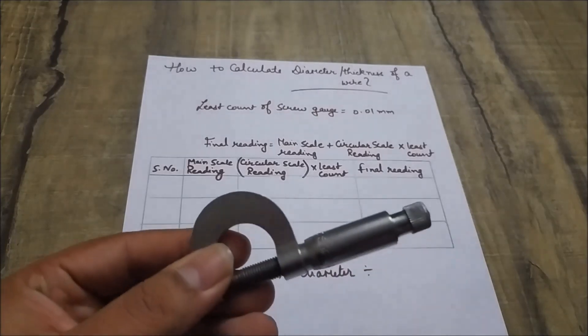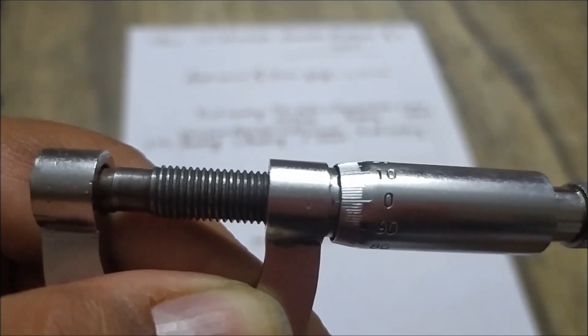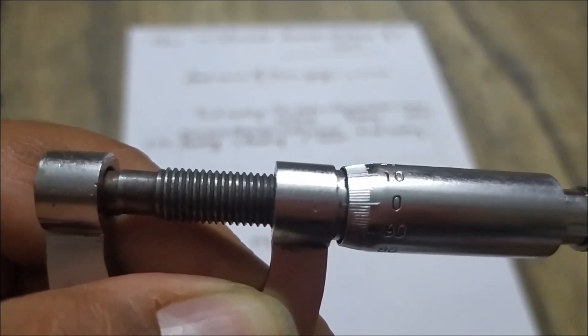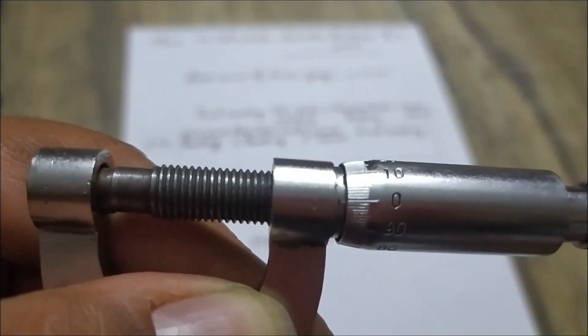The screw gauge of least count 0.01 mm. You can clearly see that the zero division of circular scale is coinciding with the baseline of our main scale. Means there is no error in our device.